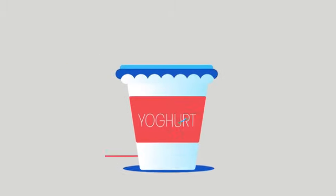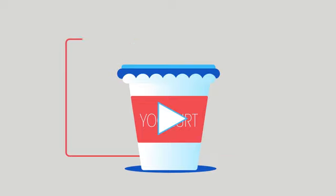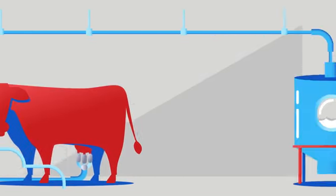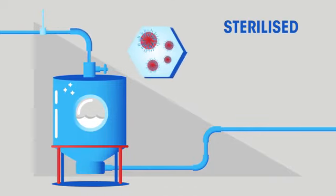So in this video, we're going to learn a bit more about how yogurt is made. First, we need milk. Before we start the next steps, all of our equipment needs to be sterilized to kill off any unwanted bacteria and other microorganisms.